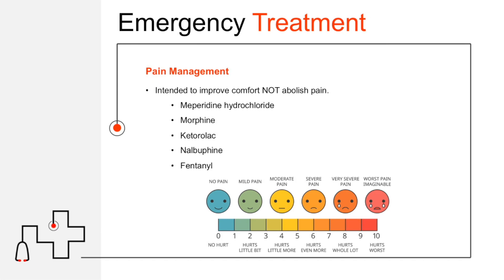Fentanyl is an opioid agonist — very potent, rapid acting, with a short half-life, which makes it popular in the pre-hospital setting. It can cause hypotension and respiratory depression, but to a much lesser degree than other synthetic narcotics or morphine. If given appropriately with a nice line running wide open and administered slowly, you're typically not going to see a lot of respiratory depression or nausea. If any of these patients have compromised ABCs, you may want to avoid pain management until you address those first.